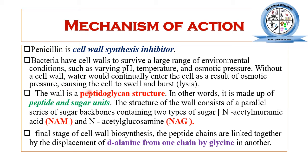Peptidoglycan is a composition of peptide and sugar units. The sugar units involved in the peptidoglycan layer are of two types: one is N-acetylmuramic acid (NAM) and the second is N-acetylglucosamine (NAG). These two sugar molecules — NAM and NAG — are utilized in the formation of the peptidoglycan layer of the bacterial cell.